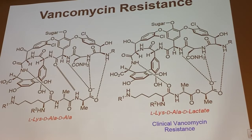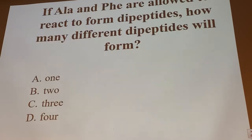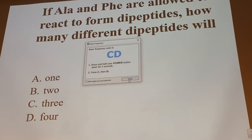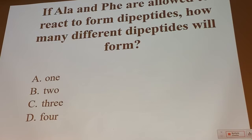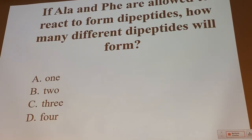To stimulate some discussion, let's have an iClicker question. If you had two amino acids — alanine and phenylalanine — and you just reacted those amino acids and wanted to form dipeptides, how many different dipeptides would you form?